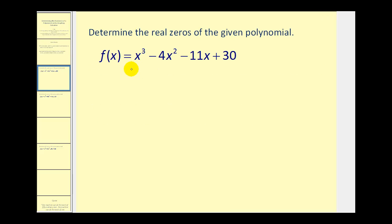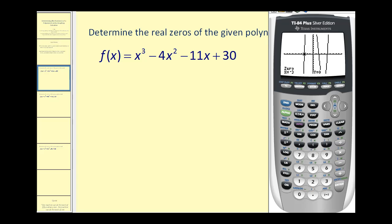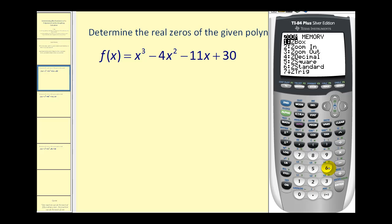Graphically, if we want to find the real zeros of this polynomial function — the values of x that make the function equal to zero — those would be the x-intercepts of the function. I've already typed in the function. Let's press zoom six to make sure we have the standard window.